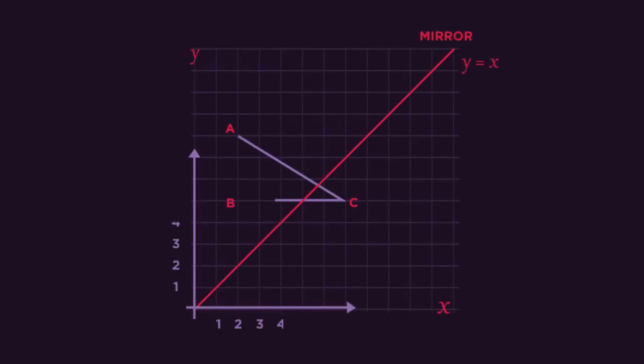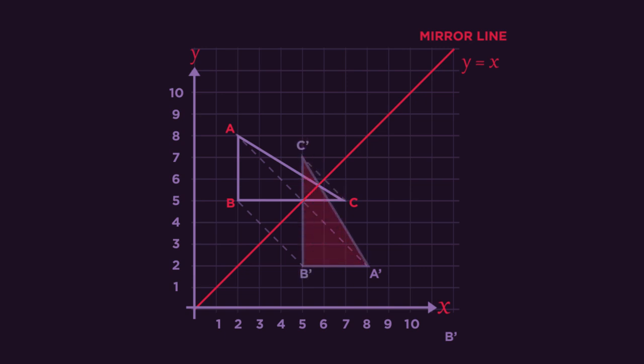What happens when the starting shape overlaps the mirror line? We still do exactly the same thing, counting squares to the mirror line, making sure we cross the mirror line at right angles, perpendicular. The only difference is that the point C needs to be reflected onto the other side of the mirror line.